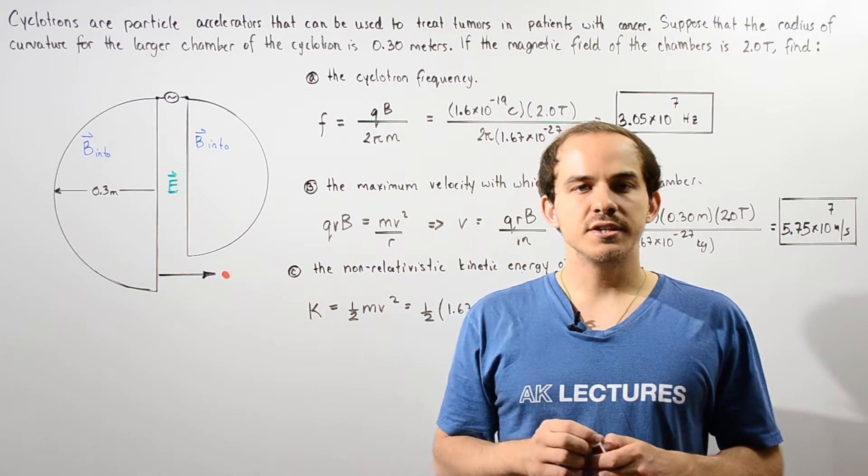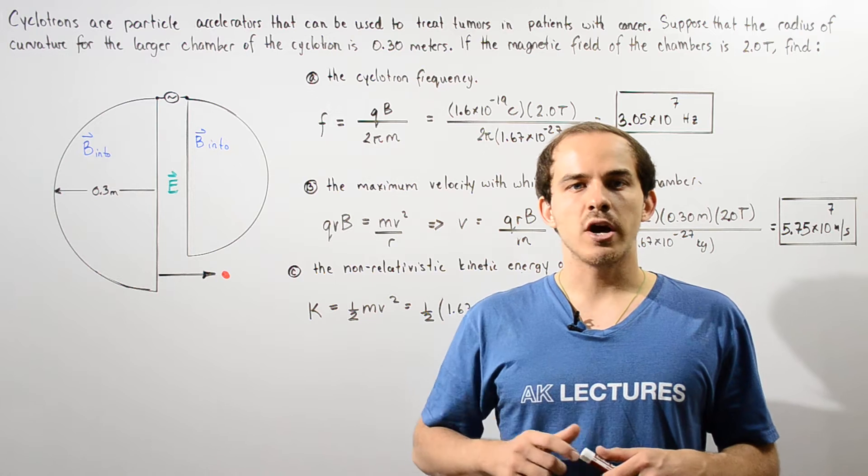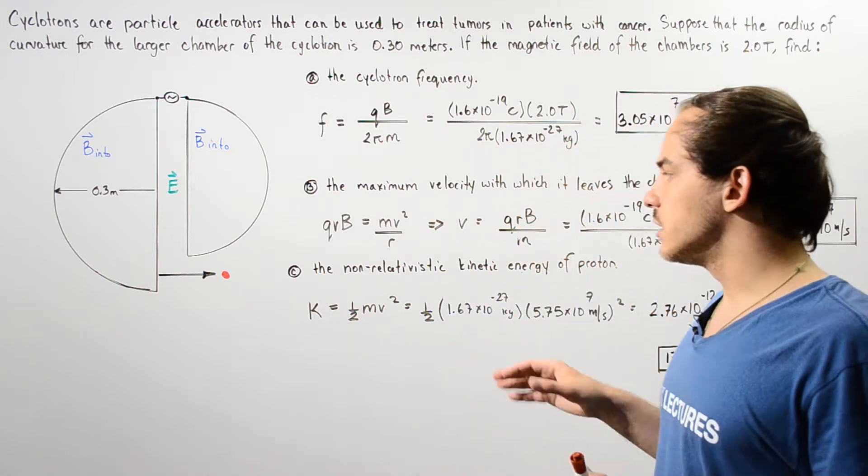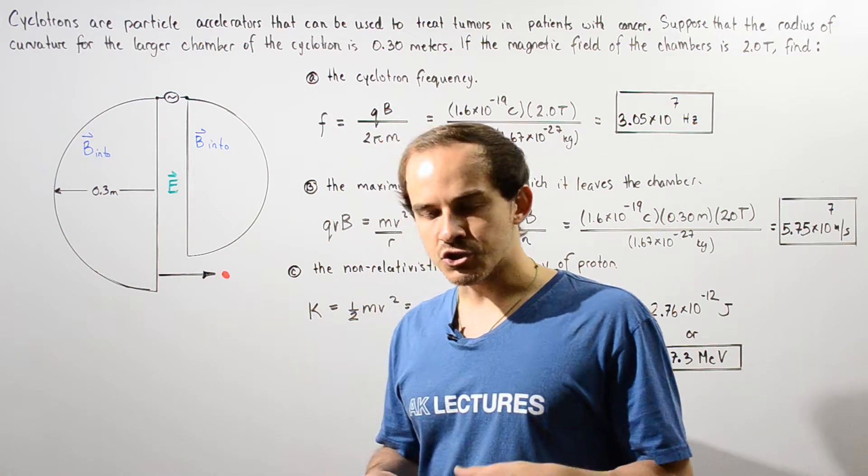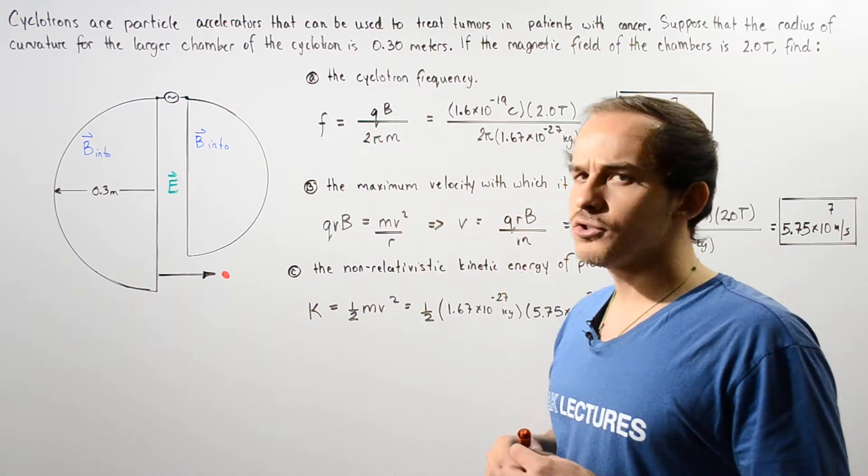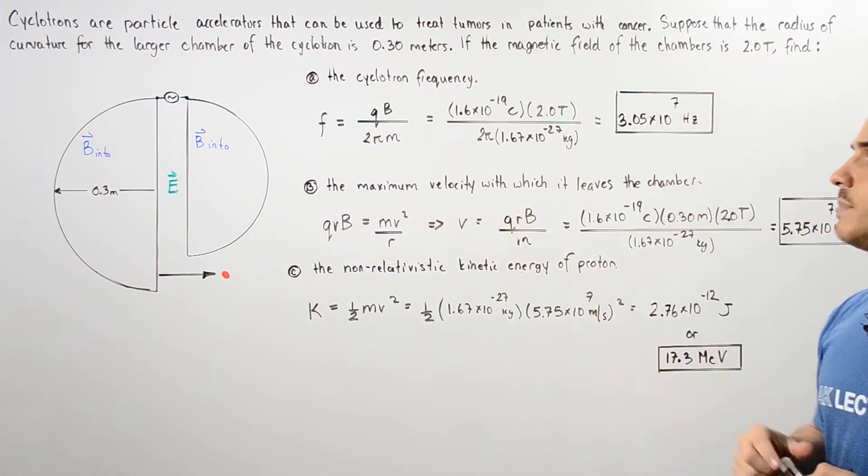Now that we discussed what a cyclotron is and we defined the cyclotron frequency, let's take a look at the following example. Recall that cyclotrons are basically particle accelerators that can be used to treat tumors in patients with cancer.